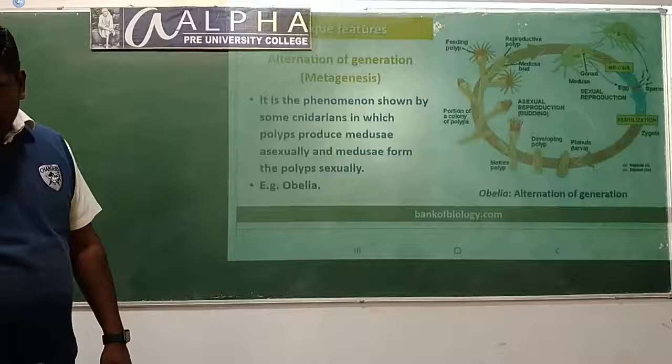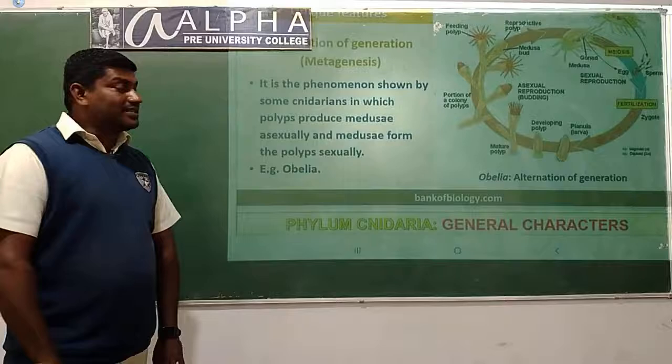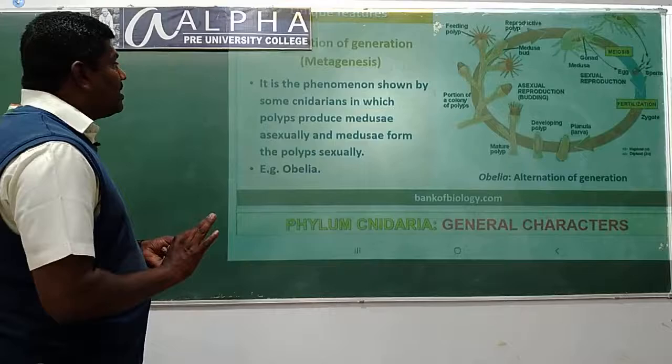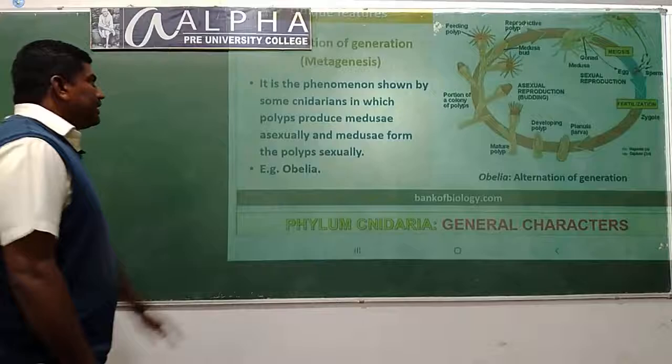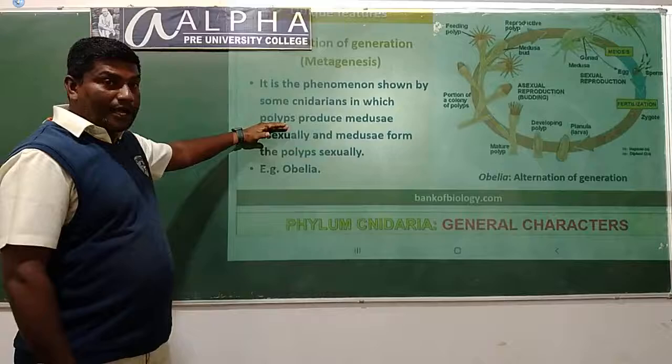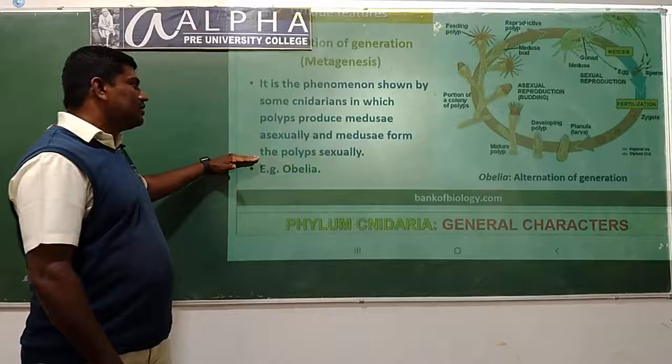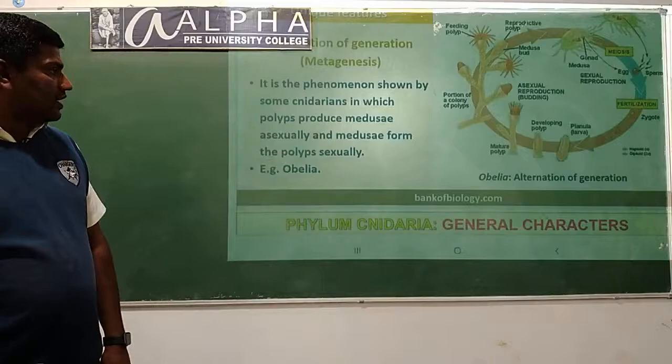Unique feature: metagenesis, or alternation of generation. It is the phenomenon shown by some Cnidarians in which polyps produce medusae asexually and medusae produce polyps sexually.